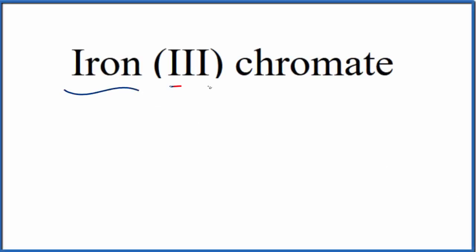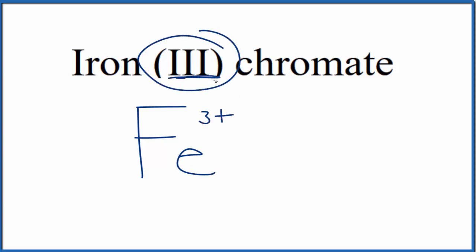To write the formula for iron III chromate, let's first write the element symbol for iron, that's just Fe. And we know that Fe is going to be 3+, because we have this Roman numeral III here in parentheses.